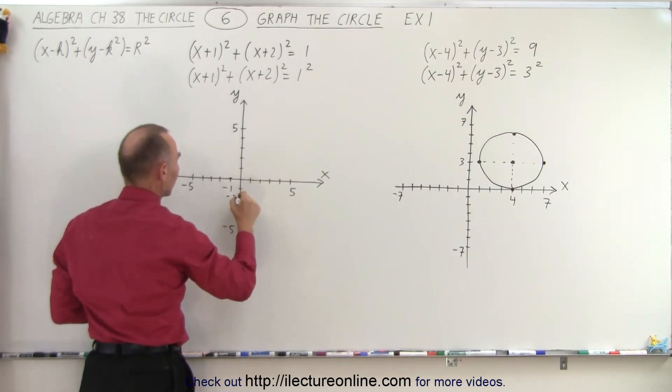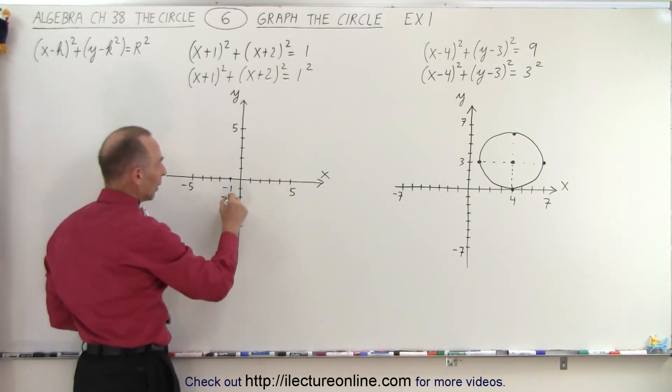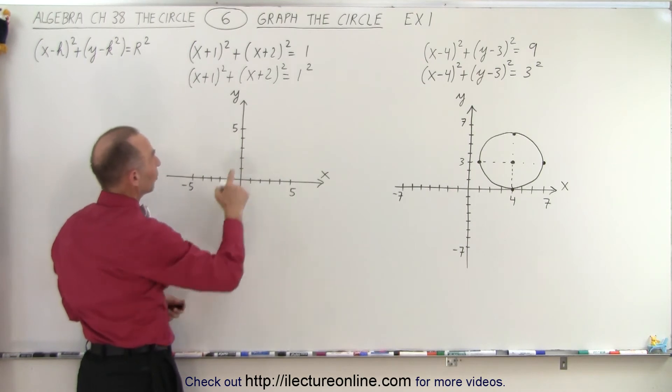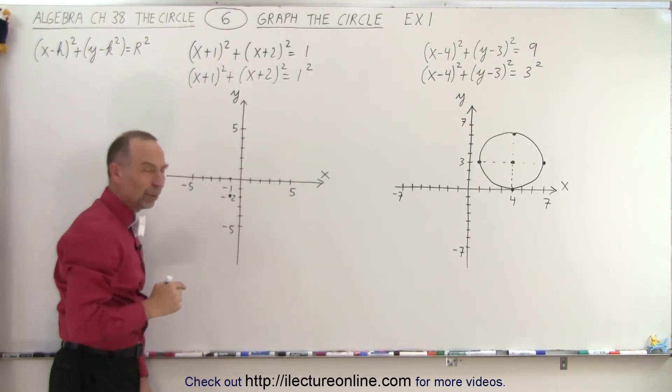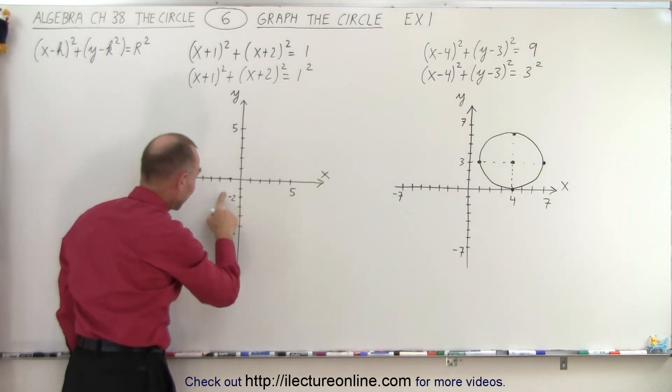So -1 is over here, -2 is over there, so where the two meet—I probably want to put my negative sign over there. That will be the center of the circle. The radius is equal to 1, and oh boy that's going to be a mess. So let me clean that up a little bit.